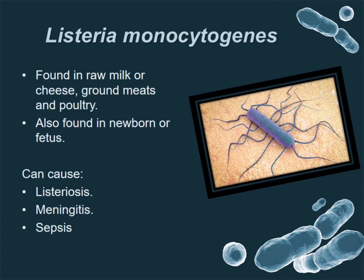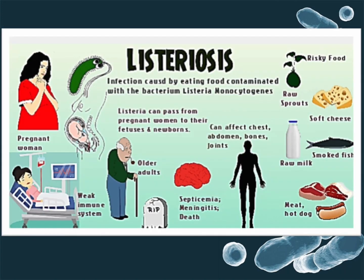Listeria monocytogenes — these bacteria can be found in raw milk or cheese, ground meats and poultry, and are also found in newborn babies or fetus. Listeria monocytogenes causes listeriosis and meningitis. The primary symptoms are pain in the brain, and if not treated in time, can result in death.